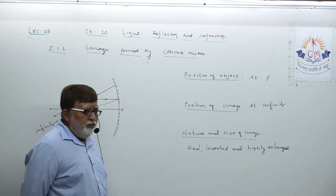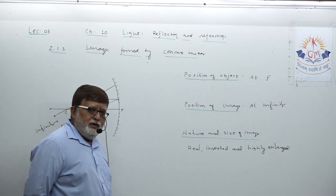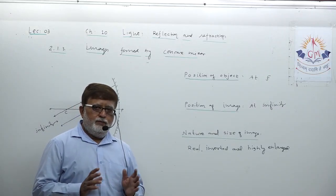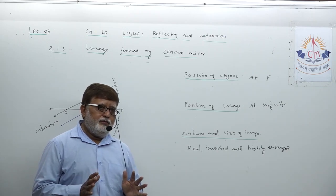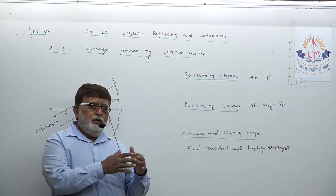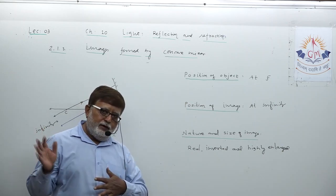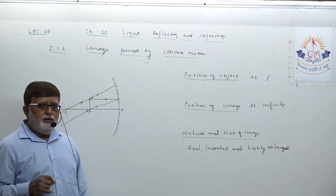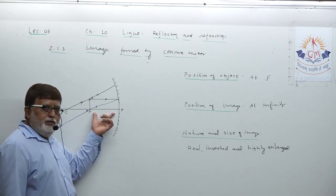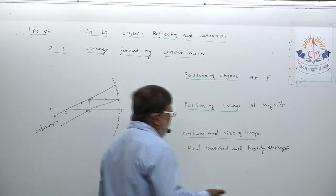So far all five ray diagrams give us real images — real inverted images. First: real inverted diminished. Second: real inverted smaller. Third: real inverted same size. Fourth: real inverted larger. Fifth: real inverted highly magnified — highly enlarged. In all five cases, we are getting real images. Now only one position is left: we have to shift the object between focus and pole.